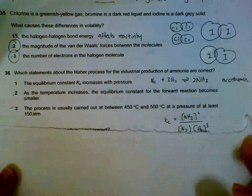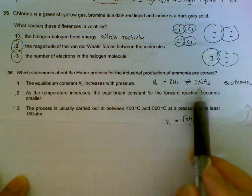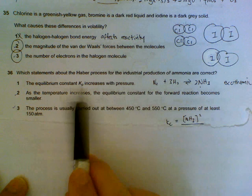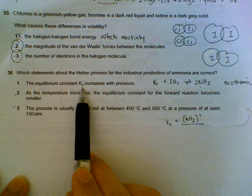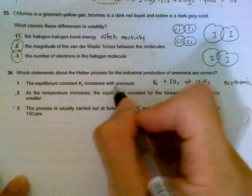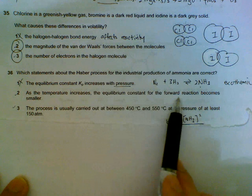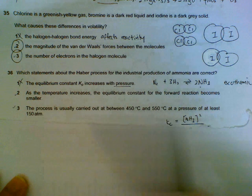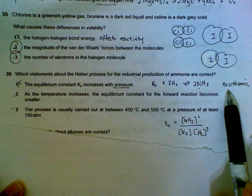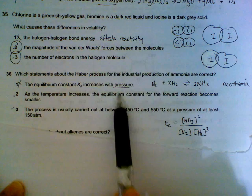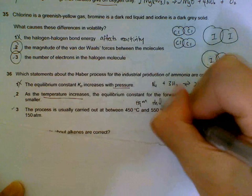Which statement for the Haber process is correct? So nitrogen plus hydrogen gives ammonia. The equilibrium Kp increases with pressure—equilibrium constant Kp or Kc is affected by temperature, not pressure. As the temperature increases, the Kc for the forward reaction becomes smaller. We can visualize this reaction. What's important is it's exothermic. If it's exothermic, when the temperature increases, the equilibrium will shift left.